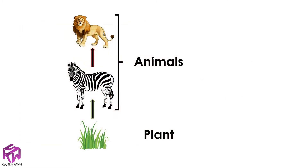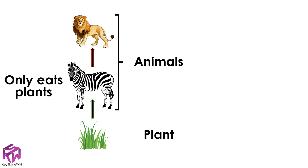So, in this food chain, we have a plant at the start and then we have animals. But what those animals eat is very different. The zebra eats plants, but the lion eats animals.